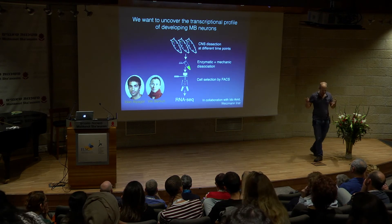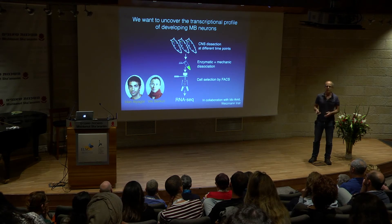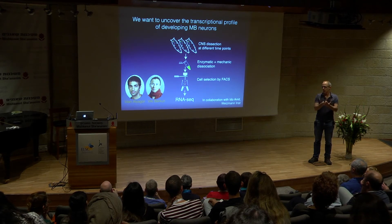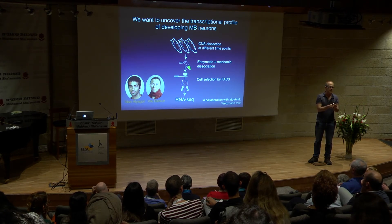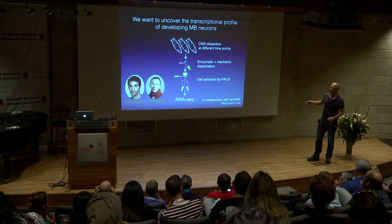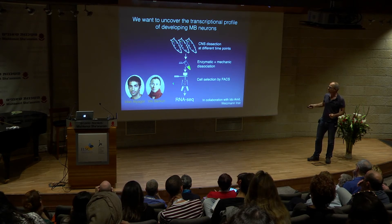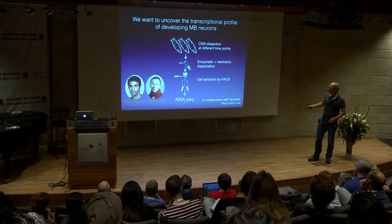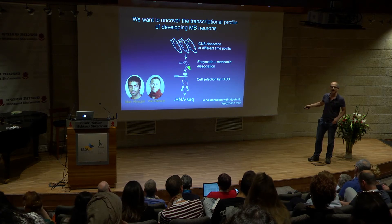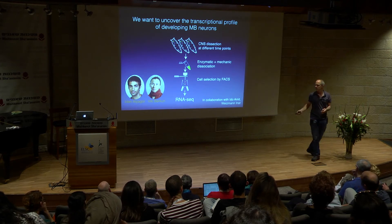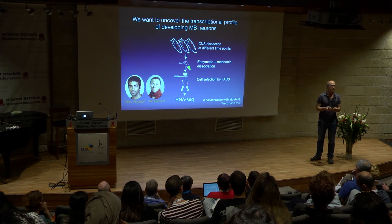Since two nuclear receptor complexes, which are essentially ligand-dependent transcription factors, regulate both of these transitions, the idea was that there must be some sort of transcriptional program in these neurons that regulates various aspects of neuronal remodeling. What Idan, a graduate student in my lab, wanted to do was sequence these neurons—a small population of very small neurons inside an intact brain—at various times during development. For that, he had to identify a good way to label, dissociate, and sort them. After a long time, we found a good way to isolate about a thousand cells, giving us enough RNA to get robust RNA sequencing, done in collaboration with Ido Amit.